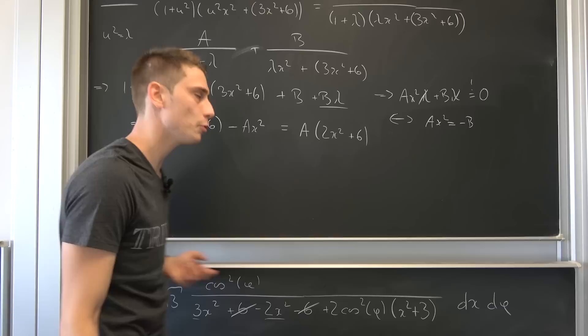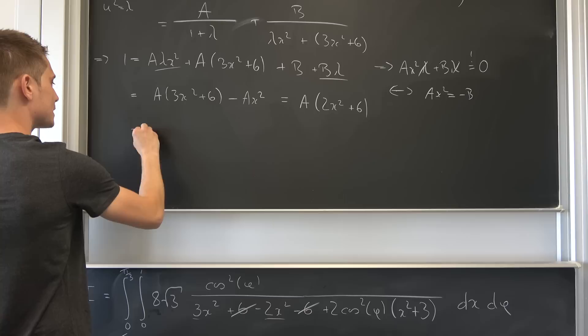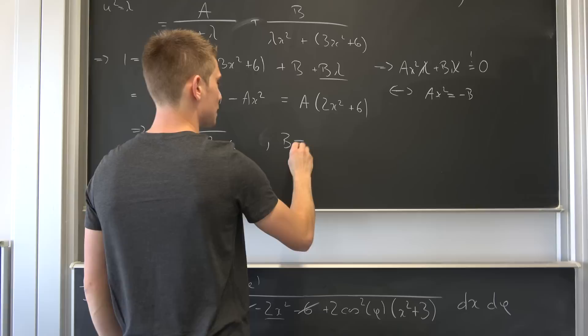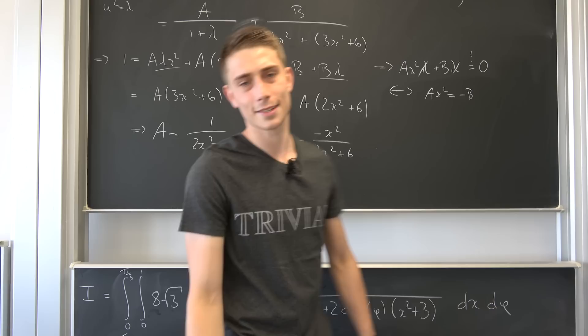We can divide both sides by this thing right here, we don't want it to be equal to 0. That means that A is nothing but 1 over 2 times x squared plus 6. And you see we also have a restriction for B right here, which also means that B is nothing but negative x squared over 2 times x squared plus 6. And this has been our partial fraction decomposition. Don't forget to replace our lambda with u squared once again. And now we can plug all of this stuff into our integral.